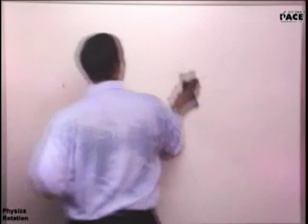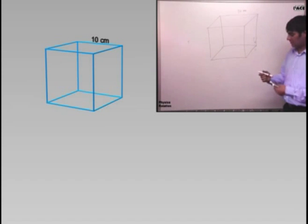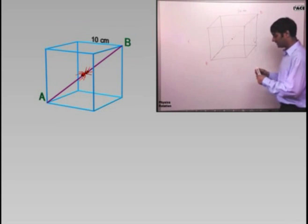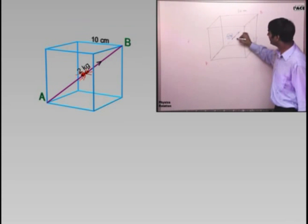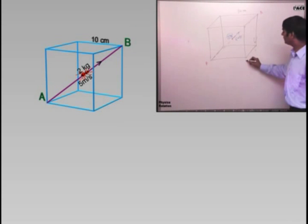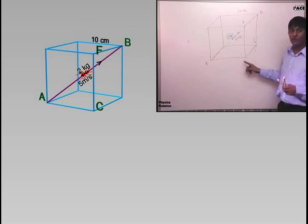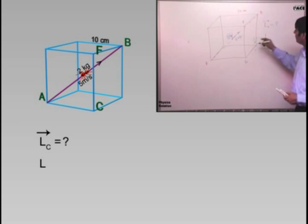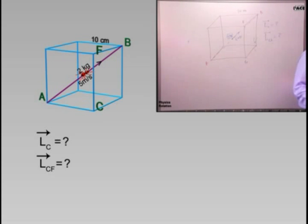Let me give you a question to check if this is clear. We have a cube with each side 10 meters. Along the body diagonal there is an insect of mass 2 kg, moving with a uniform speed of 5 m/s. This corner is called C and this corner is called F. First: find the angular momentum of this insect about point C. Second: find the angular momentum about the axis CF.